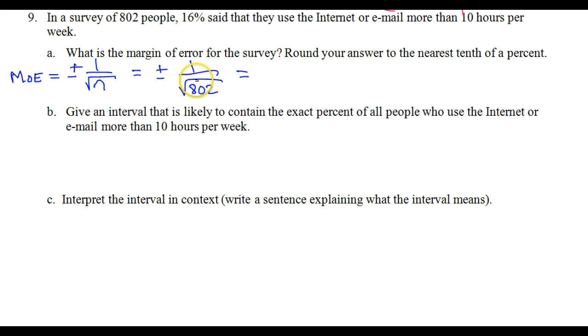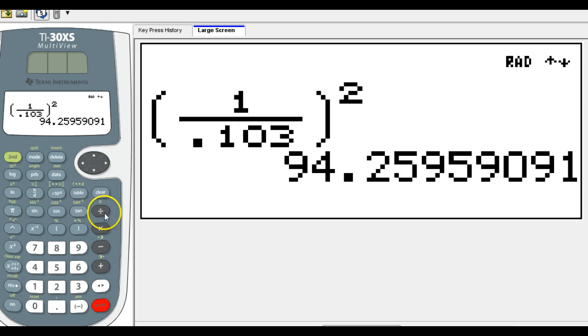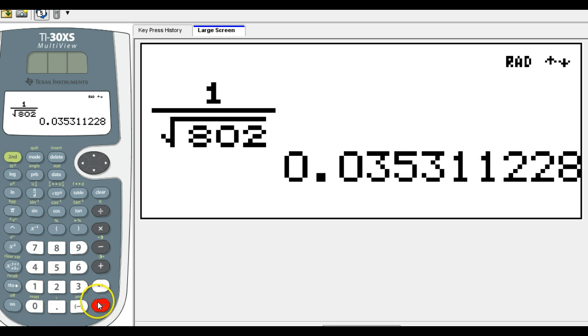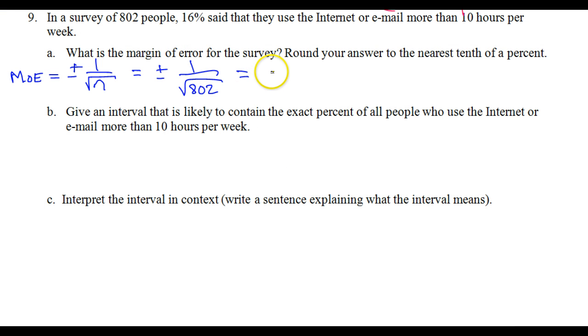So I'm just going to put this in my calculator: one over square root of 802. I get this decimal form. We write margin of error as a percent though, so moving the decimal point twice gives me 3.5%. So plus or minus 3.5%.